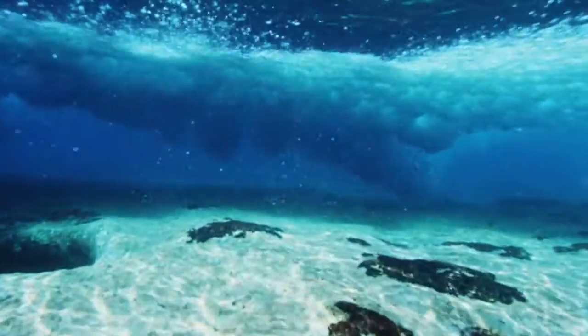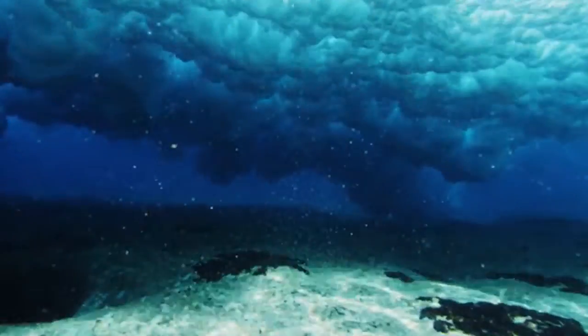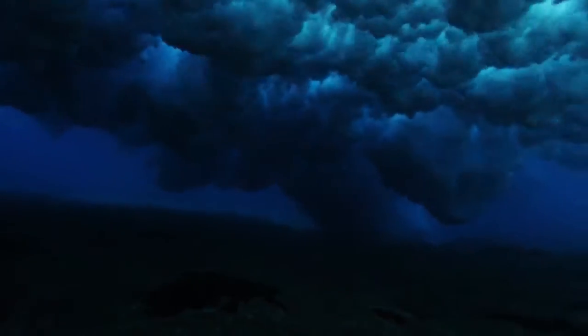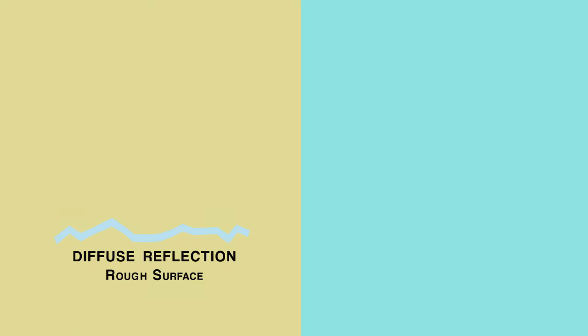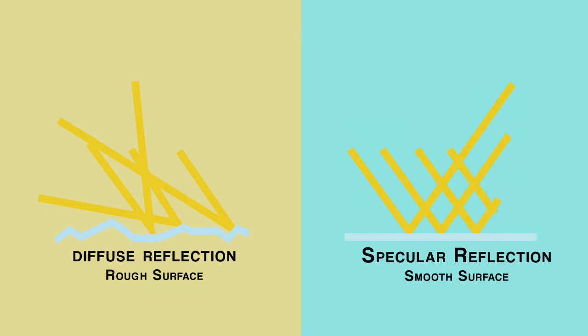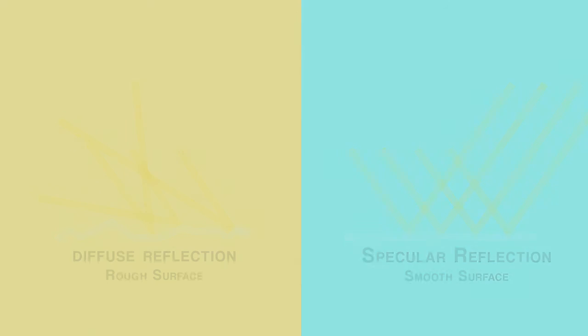When you look at a surface like sand or bricks, the light you are seeing is reflected by diffuse reflection. This is when light is reflected from a surface at many different angles, rather than just at one angle, as in the case of specular reflection.